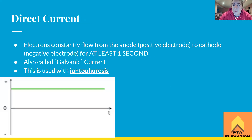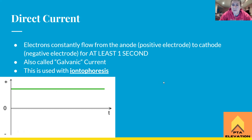Types of currents: direct current — electrons constantly flowing from the anode (positive electrode) to the cathode (negative electrode) for at least one second. This is also called galvanic current. It's used with iontophoresis. The flow is uninterrupted, all on the positive side — continuous flow of electrons from anode to cathode without stopping.